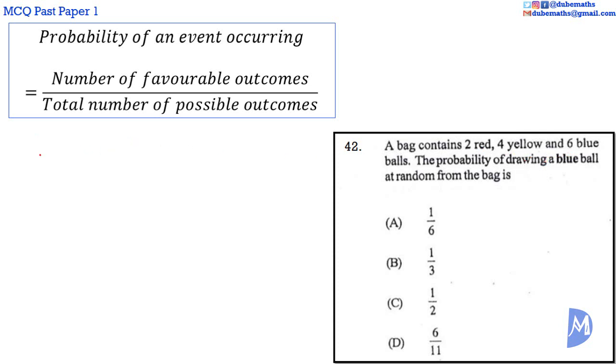The probability of drawing a blue ball at random equals the number of blue balls, 6, over the total number of balls, 12. 6 over 12 can be reduced. 6 into 6 is 1. 6 into 12 is 2. A half. The answer is C.